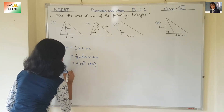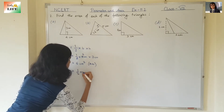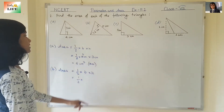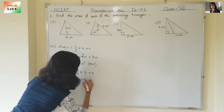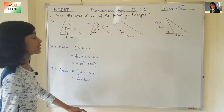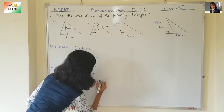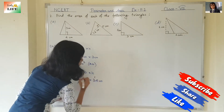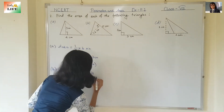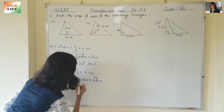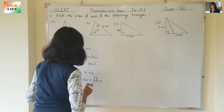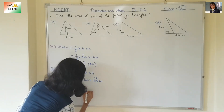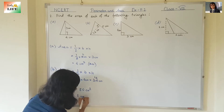Area is equal to half multiplied by base multiplied by height. Half into base — base is five centimetres. Height is three point two centimetres. Two ones are two, then two sixes are twelve, giving one point six. So five into one point six: six fives are thirty, then five ones are five — gives eight point zero centimetres square, or we can write this as eight centimetre square.